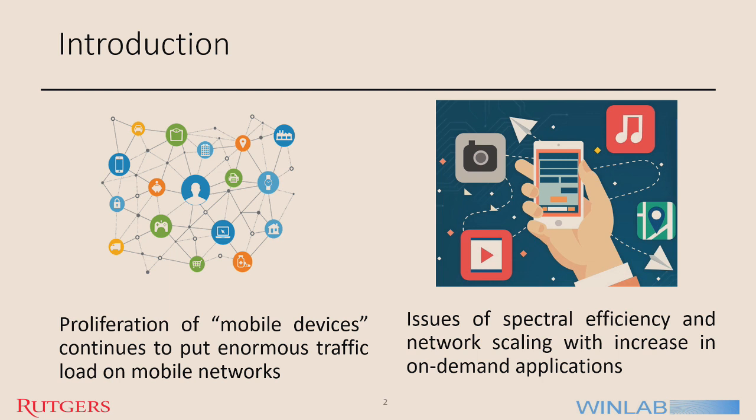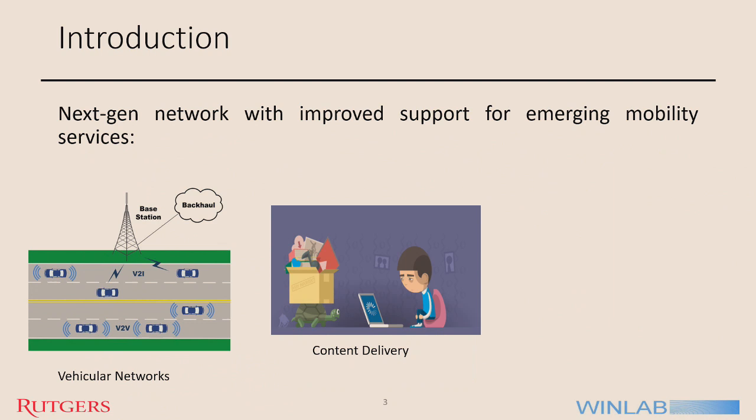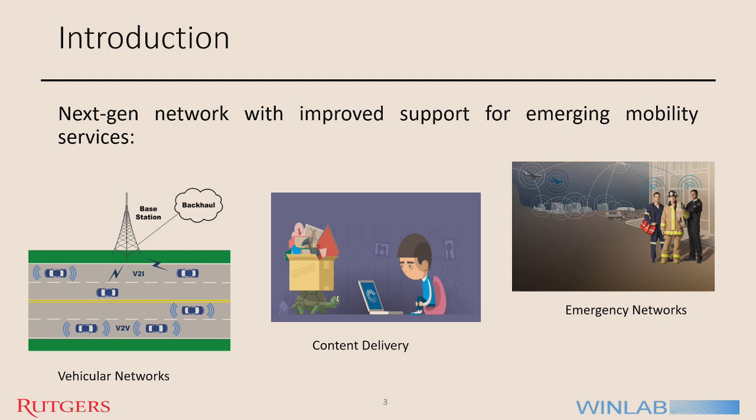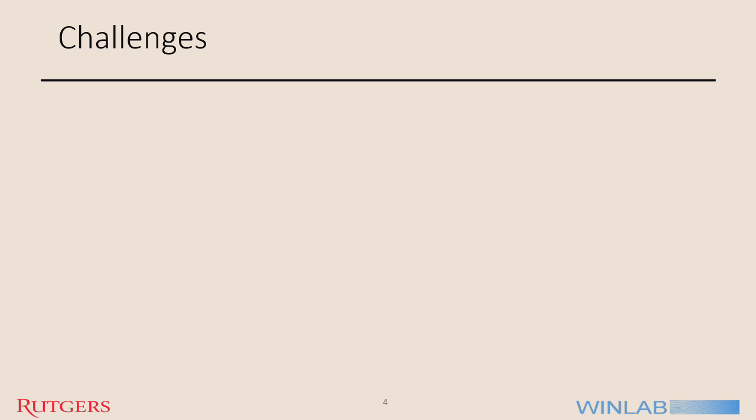In addition to this, there is the upcoming of augmented reality and virtual reality, and therefore high bandwidth and low latency requirements become imperative, and cellular providers have to take note of this. Some examples of on-demand applications are vehicular networks, on-demand content delivery, and emergency networks. We need next-generation networks with improved support for emerging mobility services.